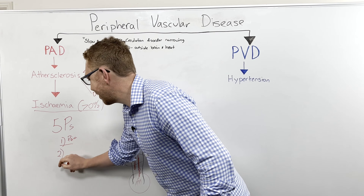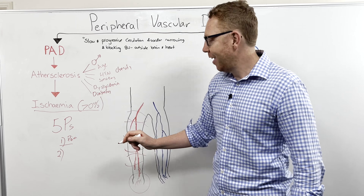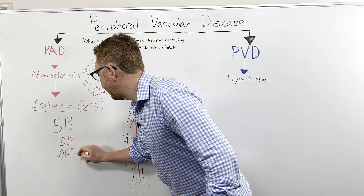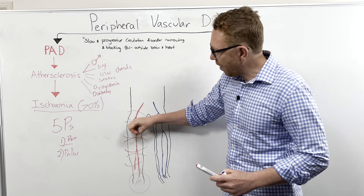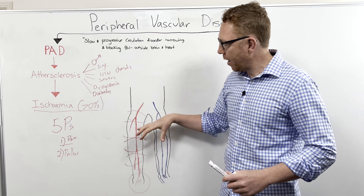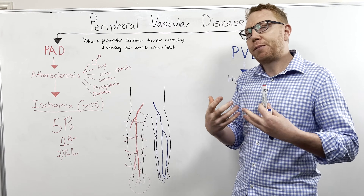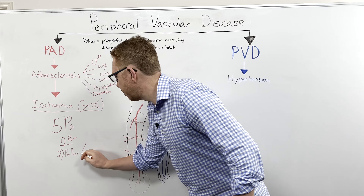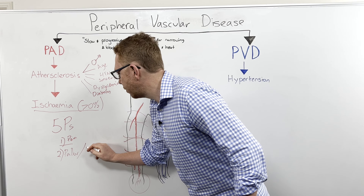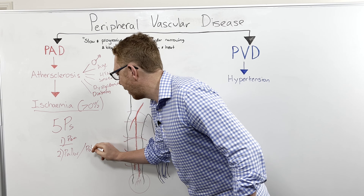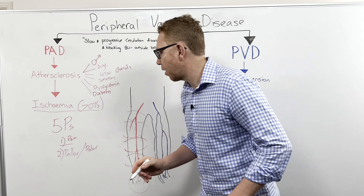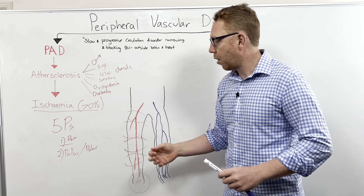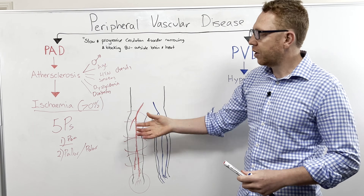The second P is pallor, which means pale. Because we're not bringing enough blood to the area, it won't be red or perfused — it will look pale. Another feature is that it will be cold, so the limb will be pale and cold because there is not enough blood flow.